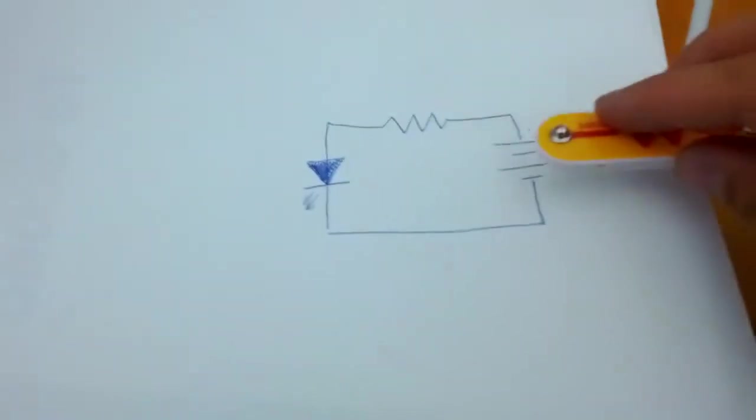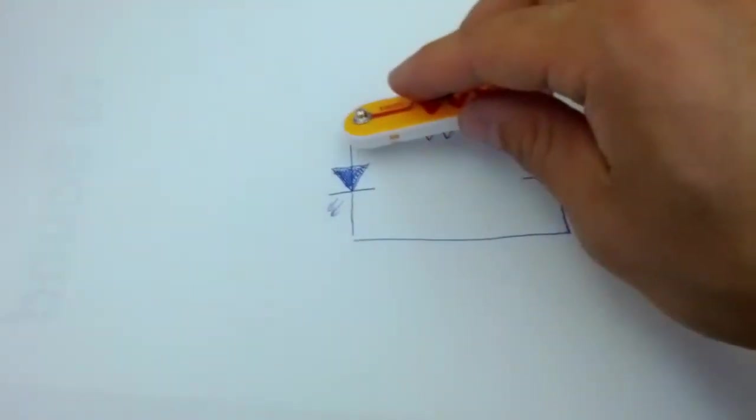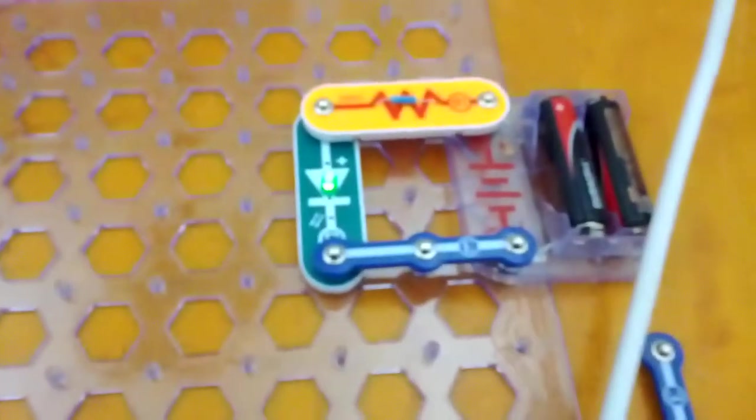So we're going to put the battery right here, have the current go through a resistor, on the way to an LED. And so when we do that, it doesn't burn out, and it's still pretty bright.